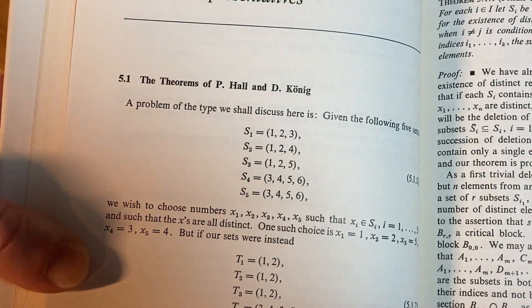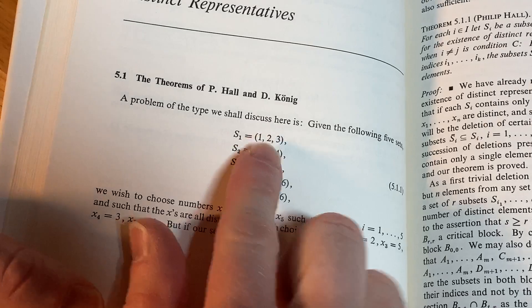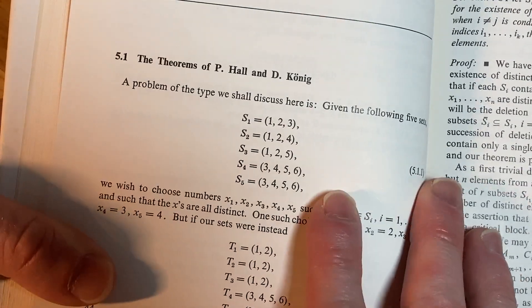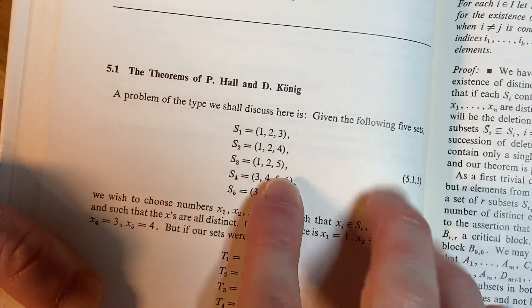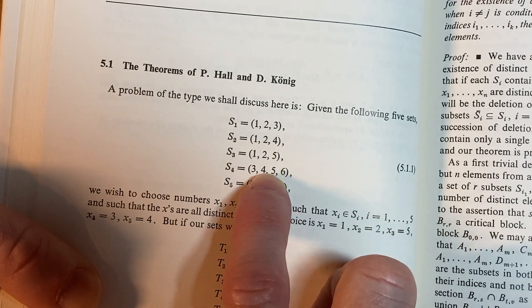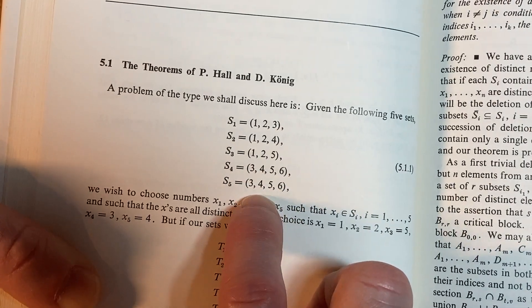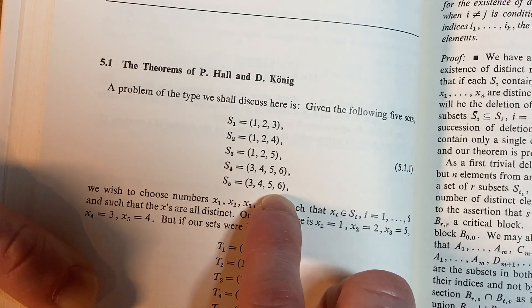What's this say here? The theorems of P. Hall and D. Koenig. A problem of the type we shall discuss here is, given the following five sets: you've got {1,2,3}, {1,2,4}, {1,2,5}, {3,4,5,6}. Oh, but look at this. We have {3,4,5,6}.